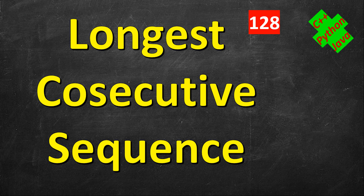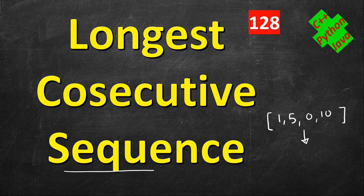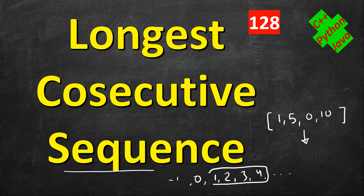In this video we have to solve a problem called longest consecutive sequence. We have an array of integers in random, unsorted order — for example 1, 5, 0, 10. We have to return the longest sequence we can form. By sequence we mean numbers occurring one after another, like 1, 2, 3, 4 — consecutive numbers counted as one sequence.